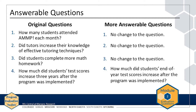However, the team decides that looking at state test scores three years after the program is not feasible, given the delays in state test results, the scope of the program, the available funding, and the need to report results quickly. As a result, the team modifies question 4 to focus on end-of-year state test data so that the team can get immediate feedback about the outcomes associated with the program.